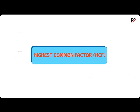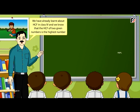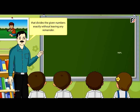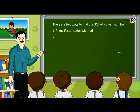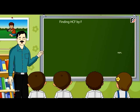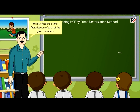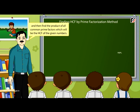Highest Common Factor (HCF): HCF of 2 given numbers is the highest number that divides the given numbers exactly without leaving any remainder. There are two ways to find the HCF: Prime factorization method and Division method. Finding HCF by prime factorization method: We first find the prime factorization of each of the given numbers and then find the product of all common prime factors, which will be the HCF.